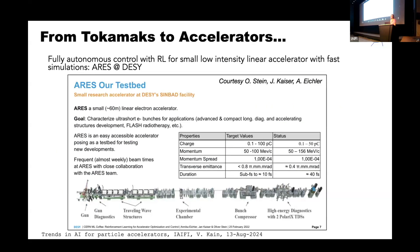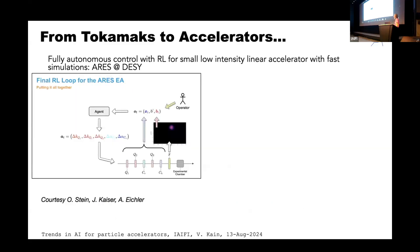When these key requirements are fulfilled, you can do what people did for fully autonomous control with reinforcement learning for a small, low-intensity linear electron accelerator. The example is ARES at DESY — 60 meters long, usually used to characterize ultrashort electron bunches. People use it as a test bed because you can get beam on it relatively easily. They trained control of the end of the beamline — beam position in H and V, and beam size in H and V — with reinforcement learning and simulation.